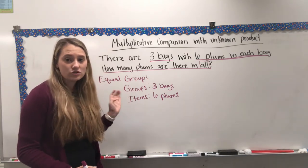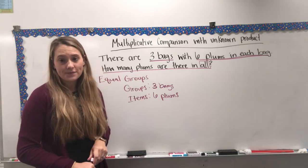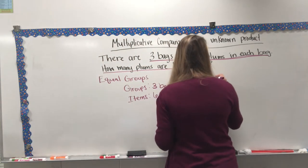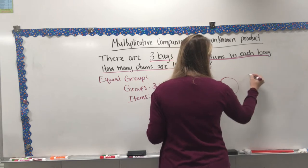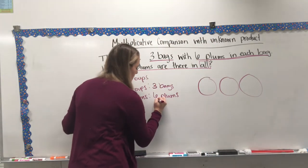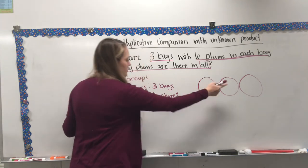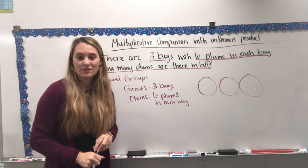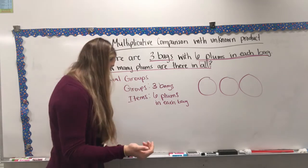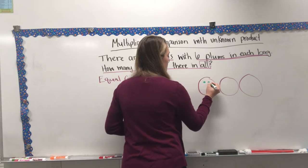Those dots represent my plums and the circles represent my bags. I have three bags — one, two, three — with six plums each. Six in this bag, six in this bag, and six in this bag. I have equal groups, because every single one of my groups looks exactly the same. Now I can multiply.